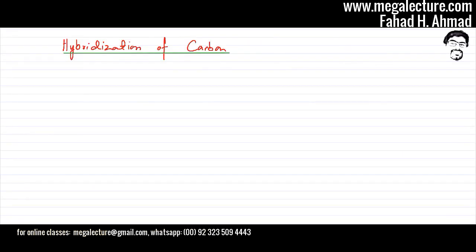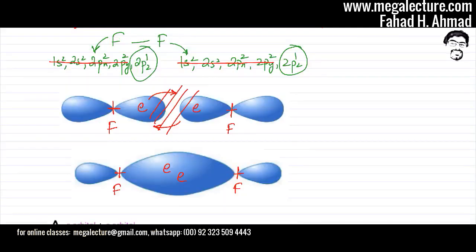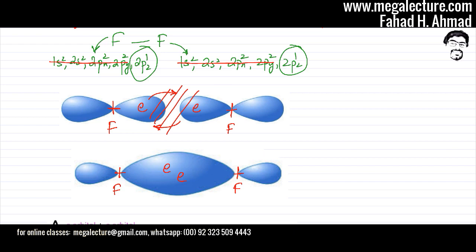The next topic is hybridization of carbon. Orbital hybridization is the concept of mixing atomic orbitals to form new hybrid orbitals with different angles, energies, and shapes — suitable for forming chemical bonds. This happens during bond formation. When orbitals bond and overlap, the bonding orbital has a completely different shape — the P orbitals and S orbitals get pulled in different directions and change shape. At A-level, hybridization is limited to carbon.